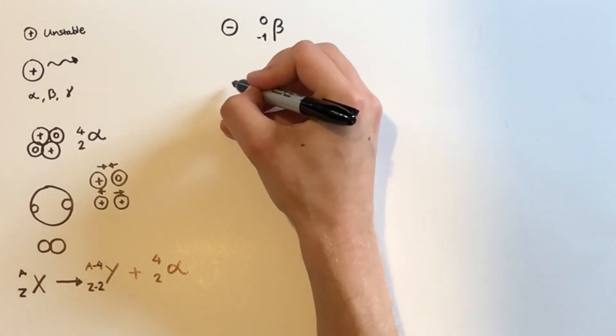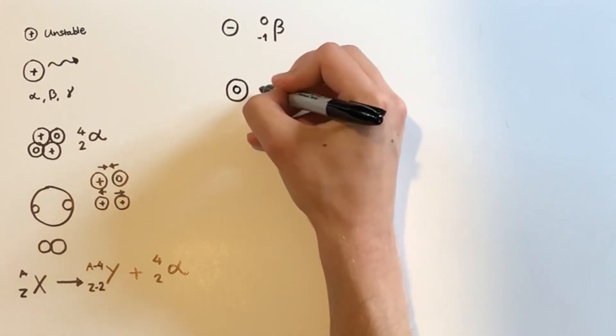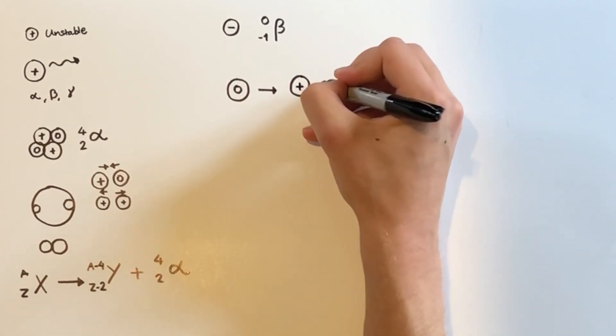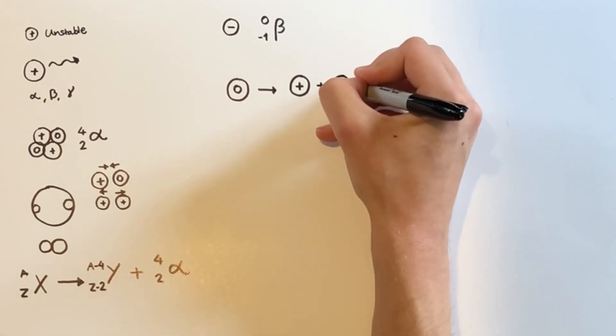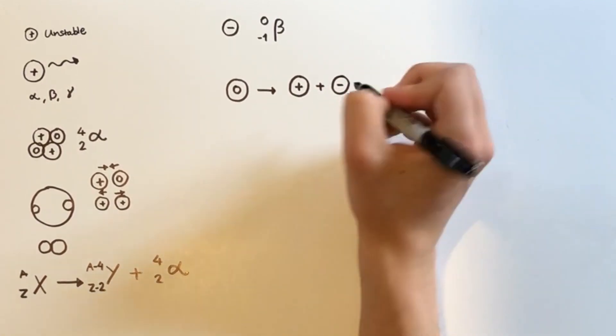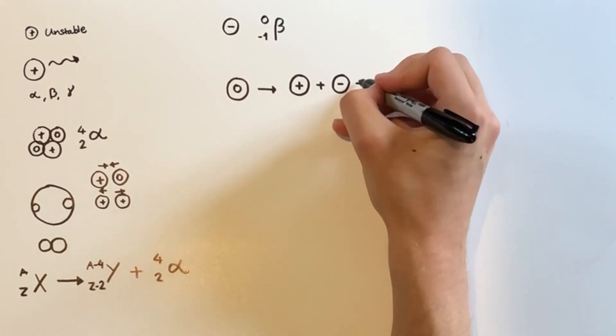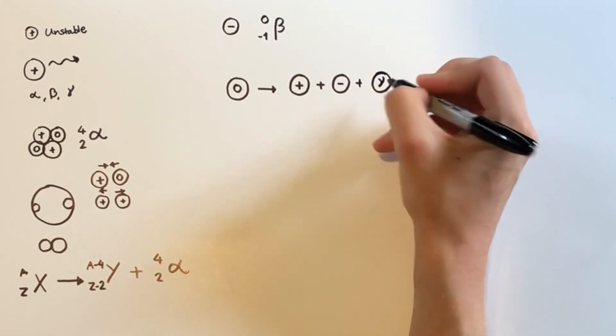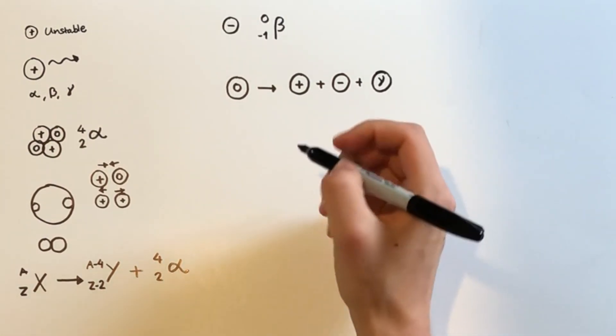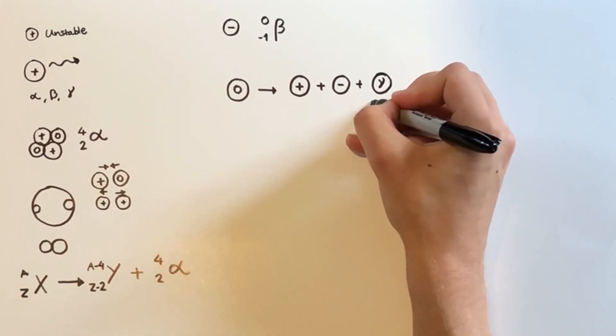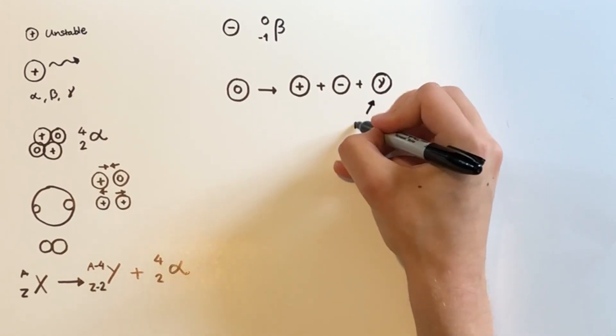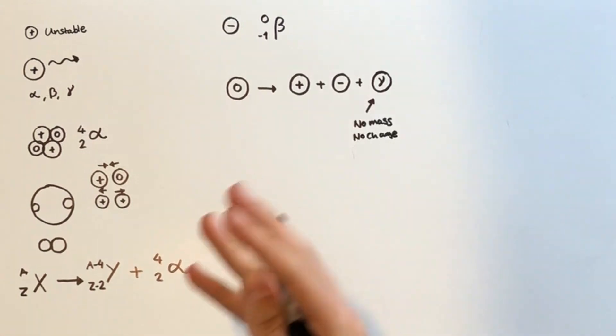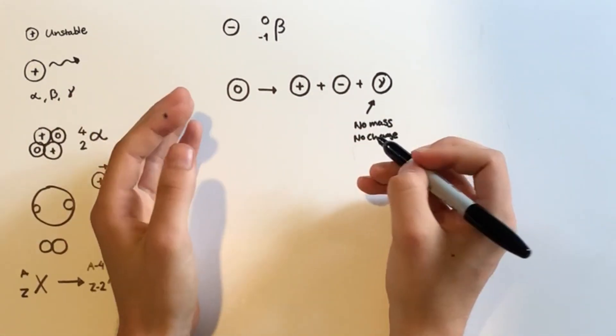So the question is, how do we get an electron to come flying out of the nucleus? Well, simply, a neutron here actually changes into a proton and releases an electron. It also releases another particle called a neutrino as well. In this case, it would actually release an antineutrino. We'll certainly discuss more on that in the section on quarks.